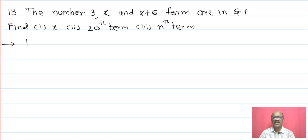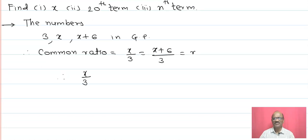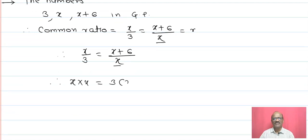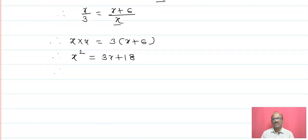Problem number 13: The numbers 3, x, and x plus 6 form a GP. Find the value of x and the 20th term and nth term. The common ratio gives x upon 3 equals x plus 6 upon x. Making cross multiplication: x into x equals 3 into (x plus 6), that is x squared equals 3x plus 18, so x squared minus 3x minus 18 equals 0.